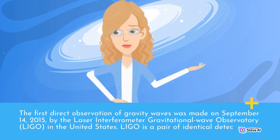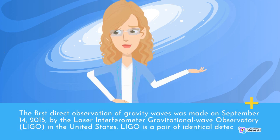The first direct observation of gravity waves was made on September 14, 2015, by the Laser Interferometer Gravitational Wave Observatory, LIGO, in the United States.